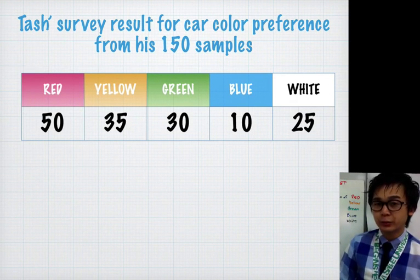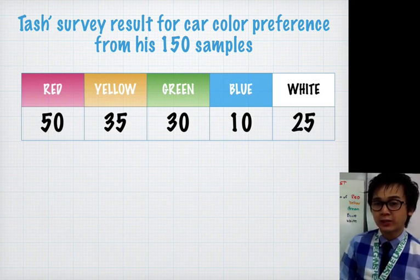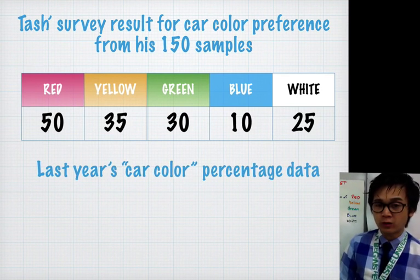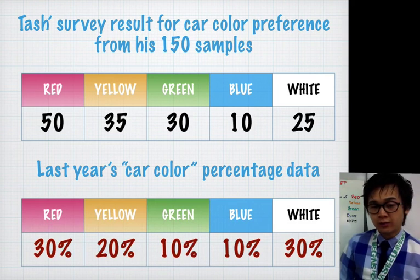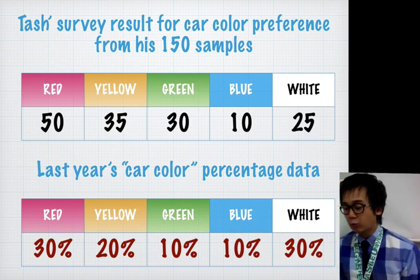That's the distribution of Tash's survey for his 150 samples. Now from last year's percentages, which I mentioned on the previous question, for the red cars, 30% prefer red last year, 20% for yellow, 10% for green, 10% for blue, and 30% for white.